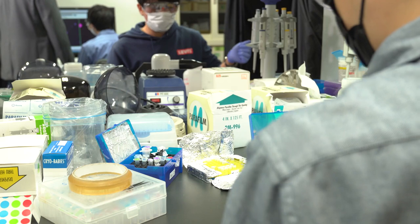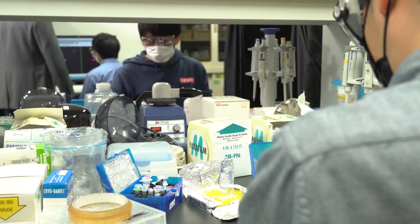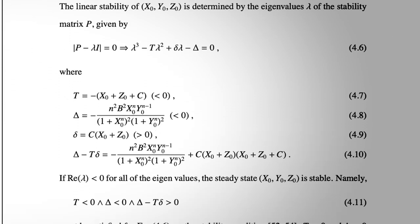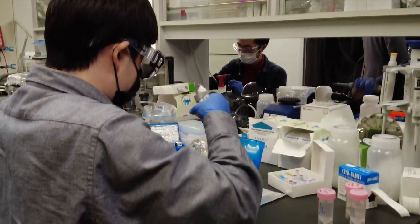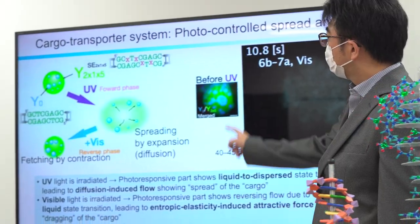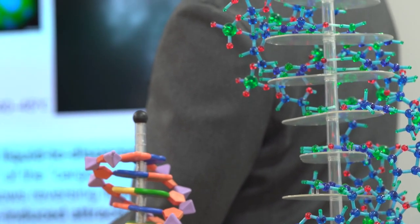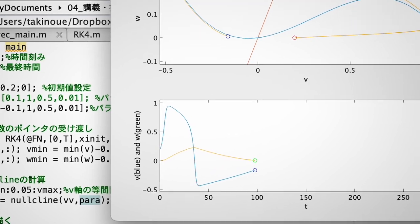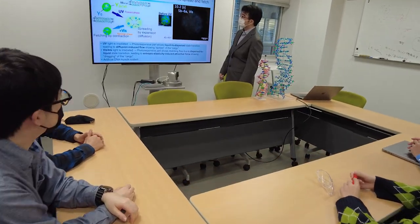Takinoue Lab focuses on the mechanism of using DNA information in living systems by utilizing information science and physical engineering. Their research on information processing technology using DNA attempts to process and output information in the same way as electronic circuits, from the viewpoints of physics and information science.